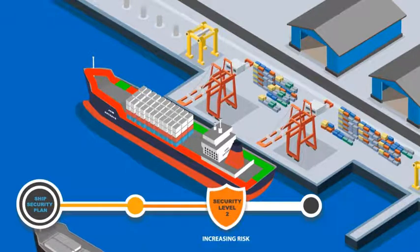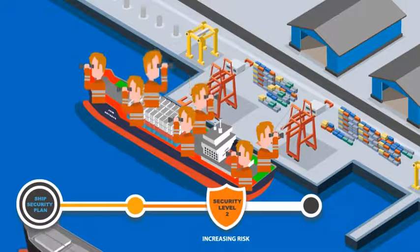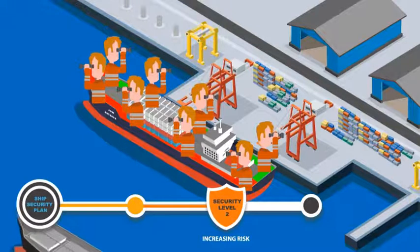At security level 2, limit the number of access points. Security lookouts or patrols should be increased, with particular emphasis on restricted areas.